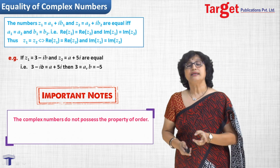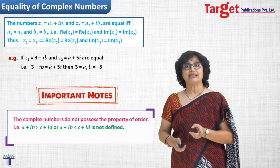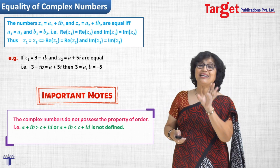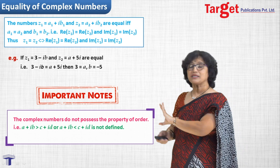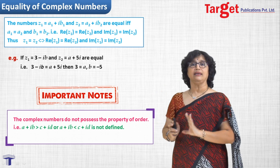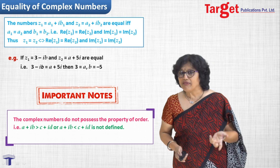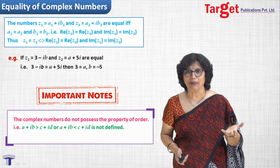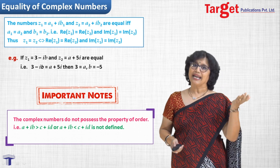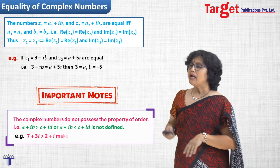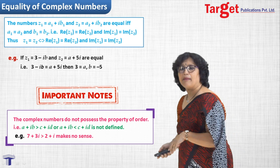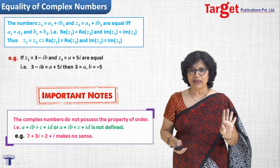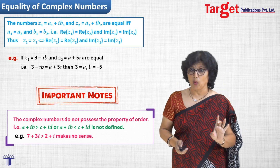Understand this once and for all — there is no such thing. You do not compare complex numbers with greater than or less than signs. So there is nothing called z1 less than z2 or z1 greater than z2. For instance, saying 7 plus 3i is greater than 2 plus i makes no sense.